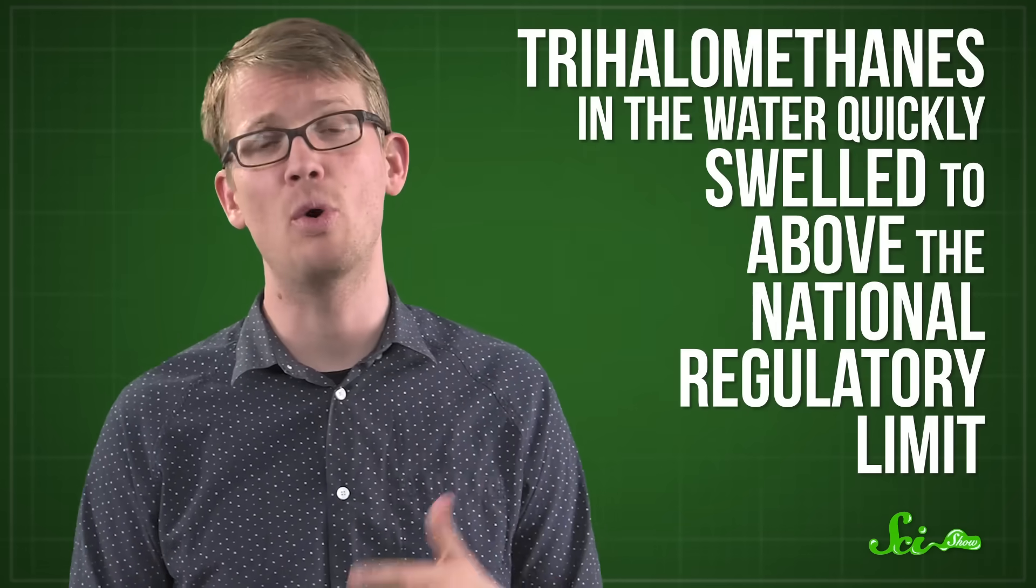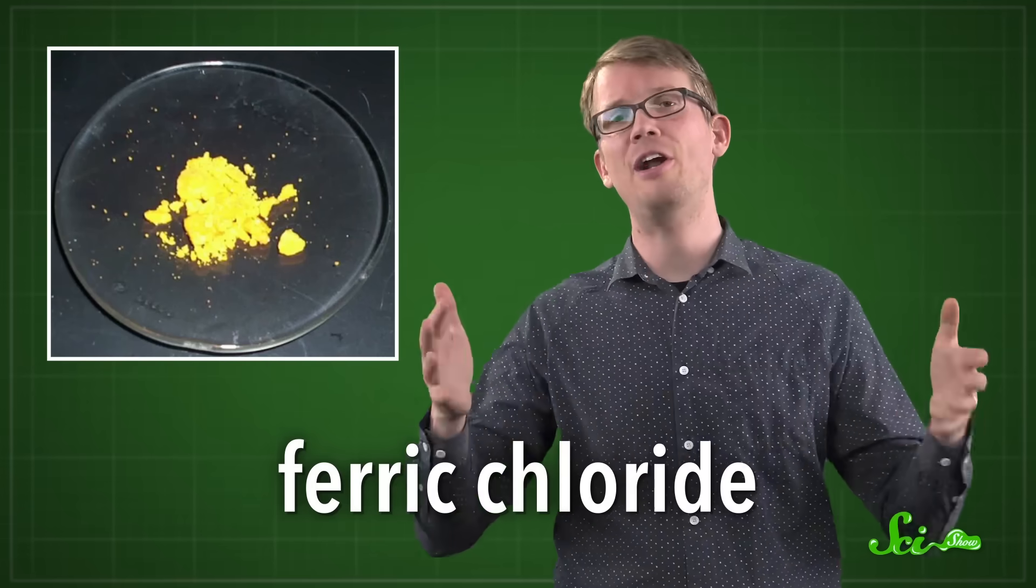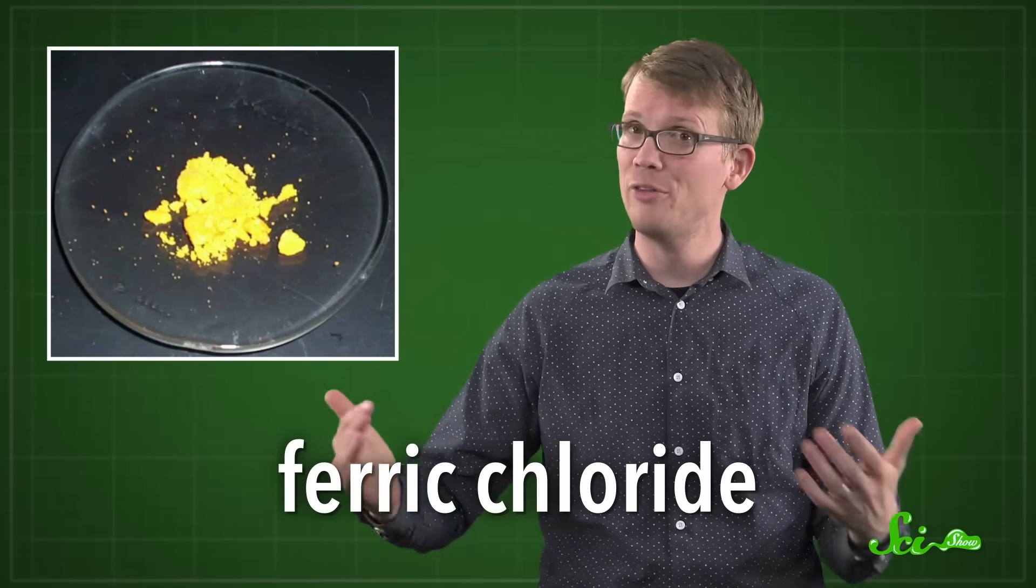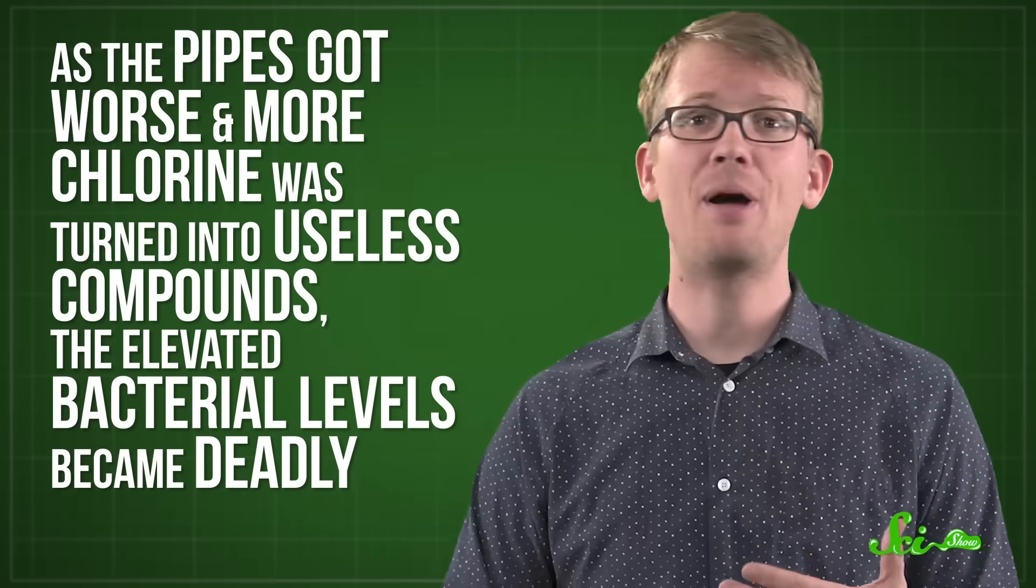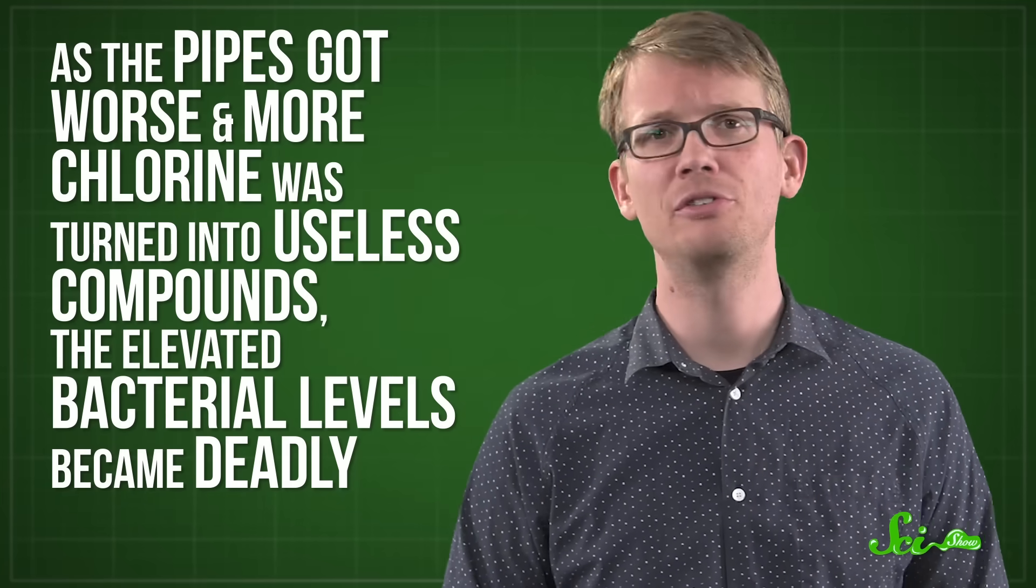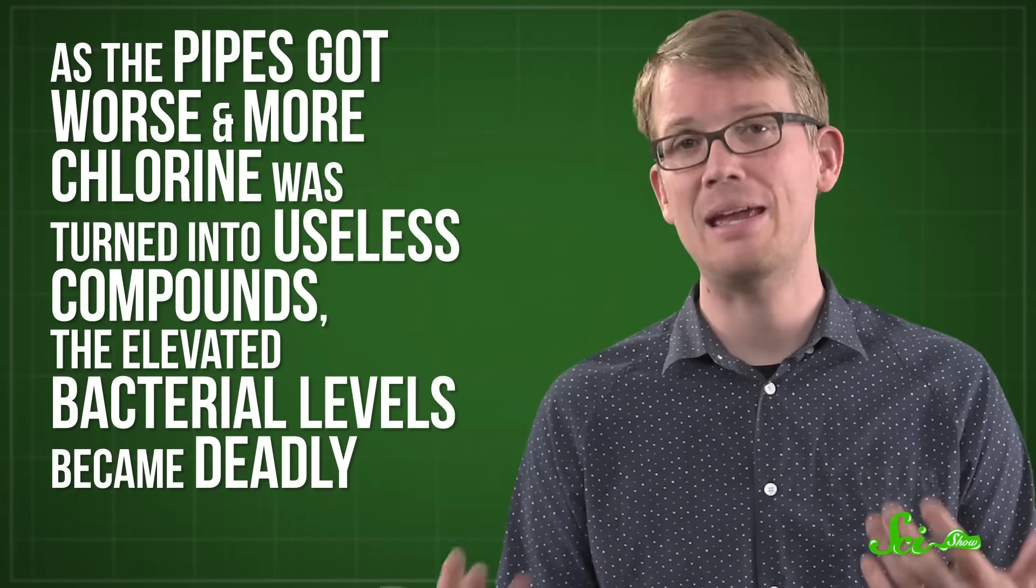Trihalomethanes in the water quickly swelled to above the national regulatory limit. So, to try and fix that problem, the treatment plant added coagulants that would react with the organic matter in the water to help them filter it out. Specifically, they used a chemical called ferric chloride, which took care of the trihalomethanes, but meant they were adding even more chloride to the water. As the pipes got worse and more chlorine was turned into useless compounds, the elevated bacterial levels became deadly.